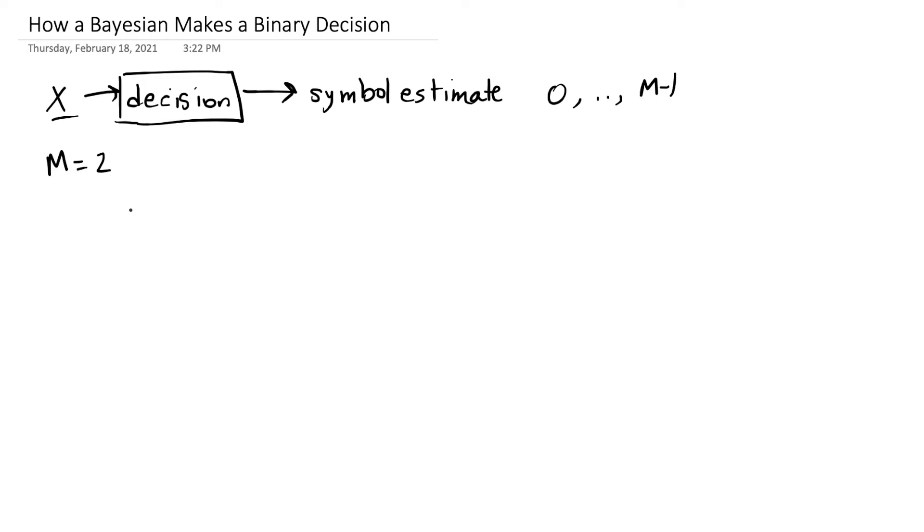For this video, we're going to start with M equals 2, and we're going to talk about making this binary decision. And we're going to talk about how do we make that in an optimal way that reduces the probability of error.